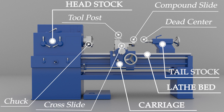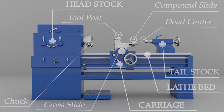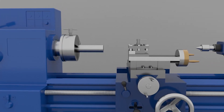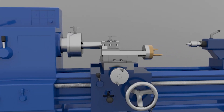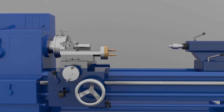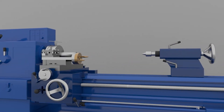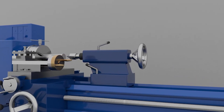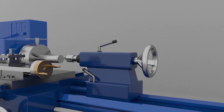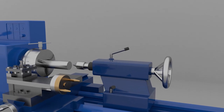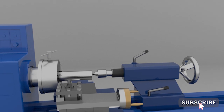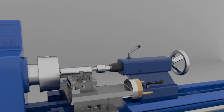Having understood the different parts of lathe, let us see few operations performed on lathe. First, let us see how a workpiece is secured onto lathe and how the tool is mounted and centered for various operations. If a larger workpiece is to be placed on the lathe, the workpiece can be supported by the help of the tailstock dead center as shown in the video. Various types of dead centers are available like pipe center, bolt center and various other types.